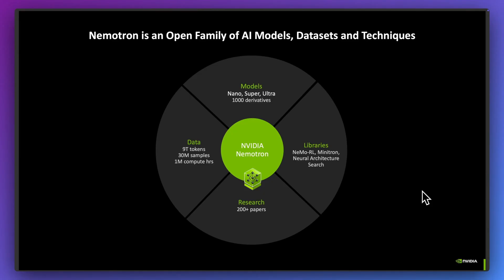They have everything from nano models all the way through to ultra models — things like 235 billion parameter models — and they also have smaller models you can run on consumer hardware. In terms of what actually comprises a Nemotron model, it varies depending on the model, but this gives you a general overview of how they're actually built.